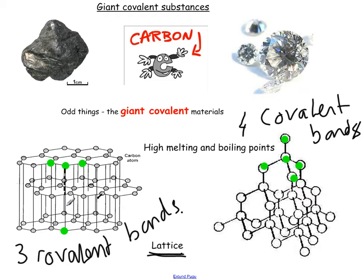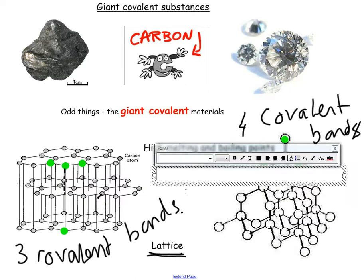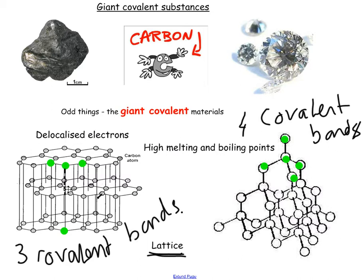There are electrons between the layers, and these are called delocalised electrons — this is higher tier content. Delocalised electrons whiz around between the layers only in graphite. This means graphite can conduct electricity, because a flow of electrons means electricity is flowing. Diamond has no delocalised electrons, so it doesn't conduct electricity, but both have high melting and boiling points.